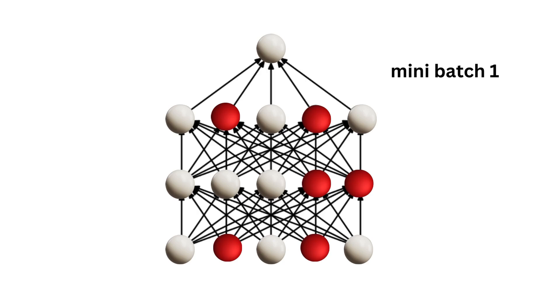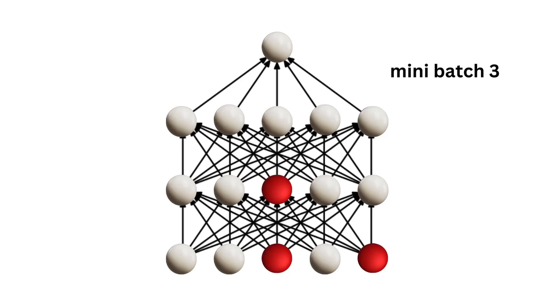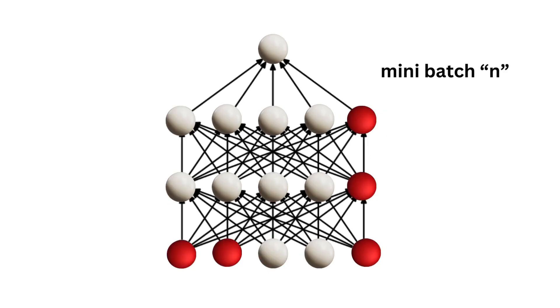For instance, in the first mini-batch, the output of the neurons in red is multiplied by zero, while the neurons in white are multiplied by one. In the second mini-batch, a new binary mask is constructed and applied to the network, continued for as long as the network is training, up to the last mini-batch.